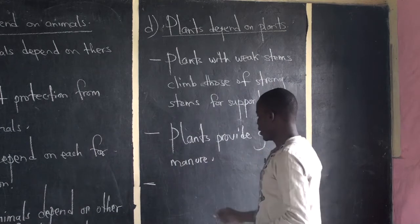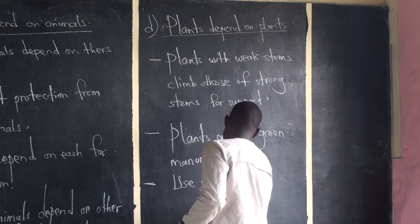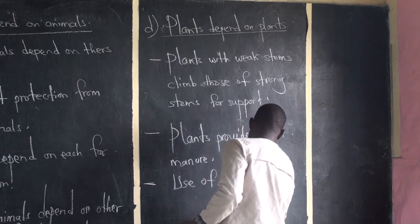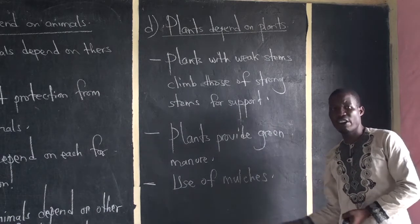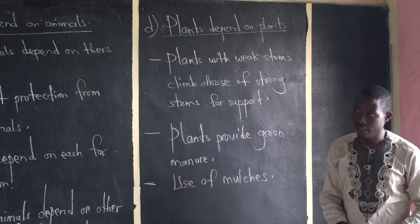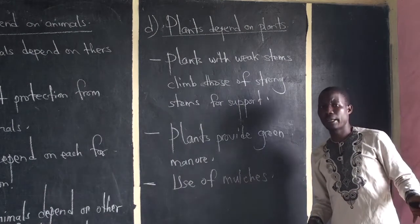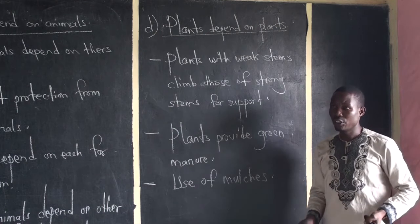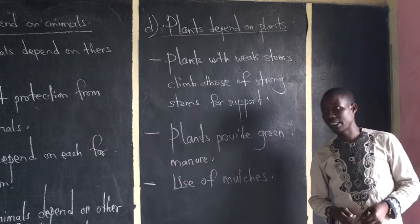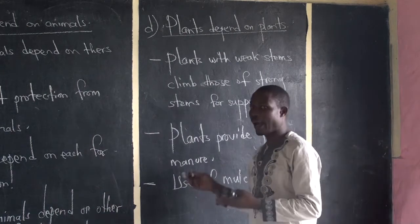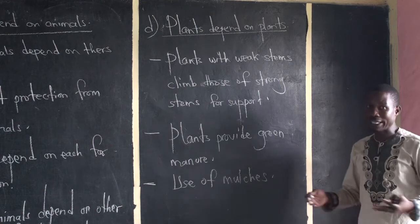Use of mulches: if you have a banana plantation, pineapple plantation, or tomato plantation, you need to cover the ground — you have to mulch. That is a way of interdependence. Plants in this case are depending on other plants for survival. This gives us a clear view of interdependence.